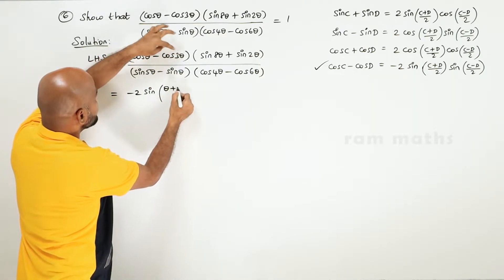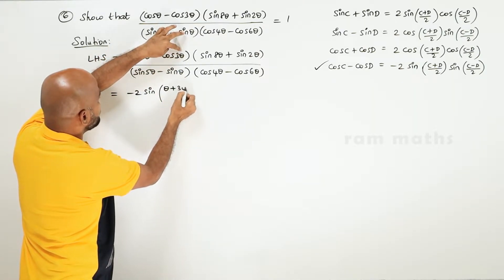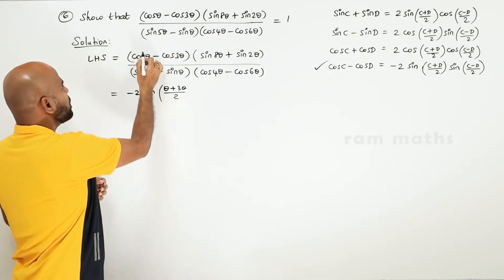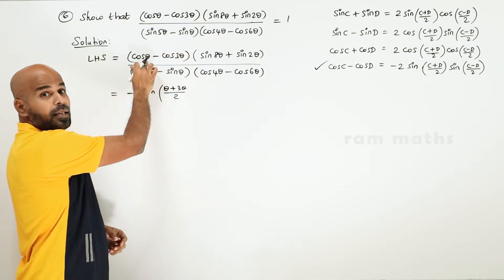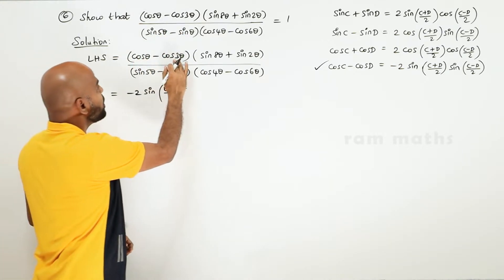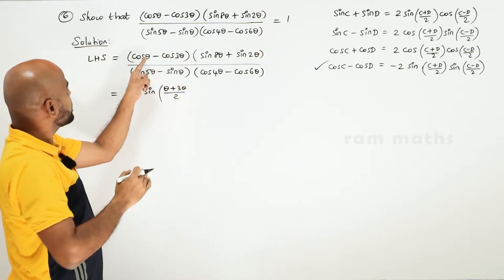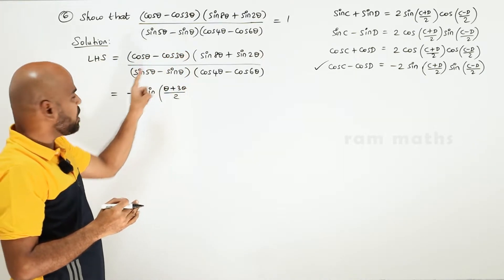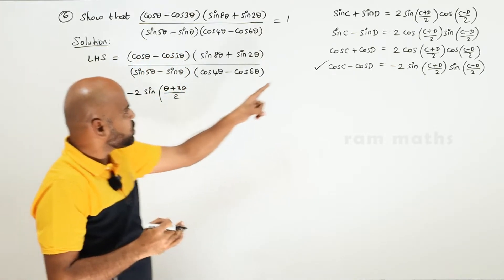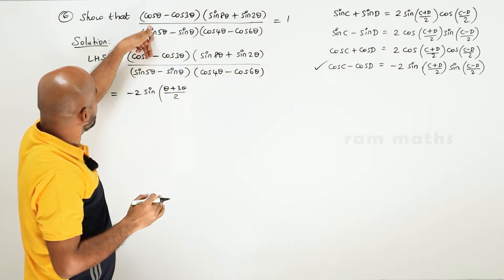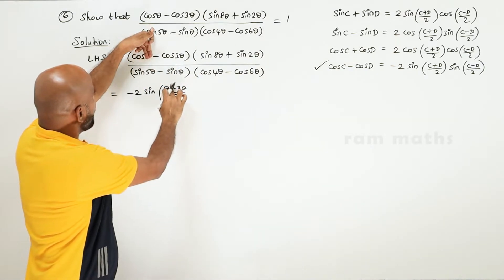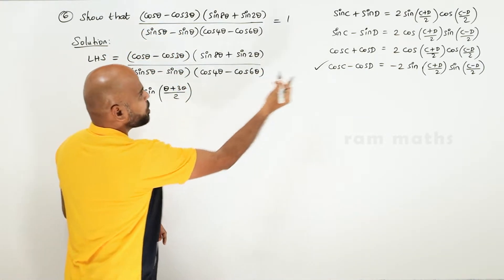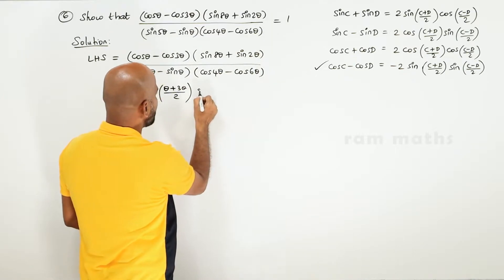So theta plus 3 theta by 2 — with C substituted as theta and D as 3 theta. Applying cos C minus cos D gives minus 2 into sin (C plus D) by 2. Bracket close, and again sin.